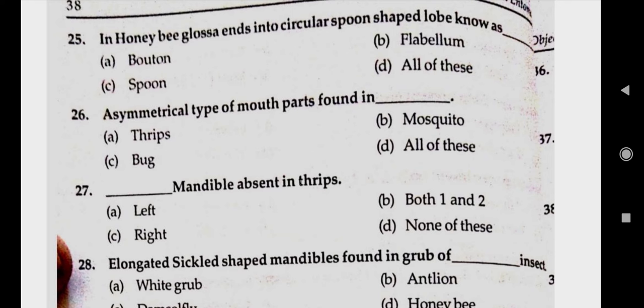Question number twenty-eight: elongated sickle-shaped mandibles are found in grub of insect. Answer B, antlion.